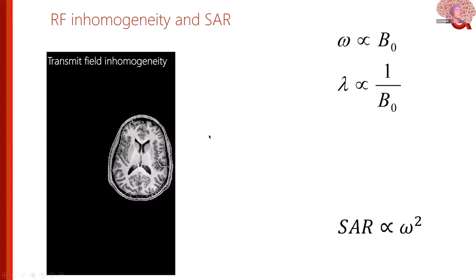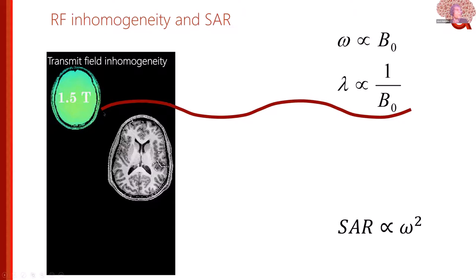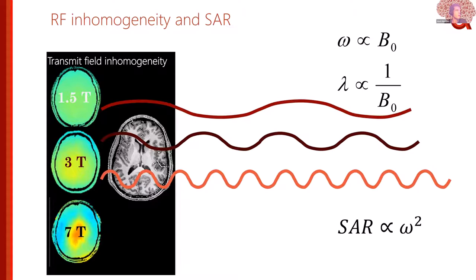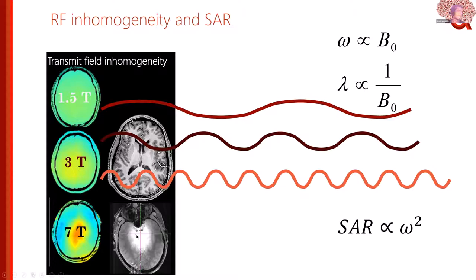One of the biggest penalties of high field, especially relevant for segmentation, is that higher frequencies require shorter wavelengths. At 1.5 Tesla the wavelength is much larger than the brain, so you can illuminate the brain homogeneously. At 3T things get less homogeneous, and at 7T it gets quite problematic. My first images at 7T showed that the thalamic region tends to look brightest because that is where you have the highest SNR or the best excitation.